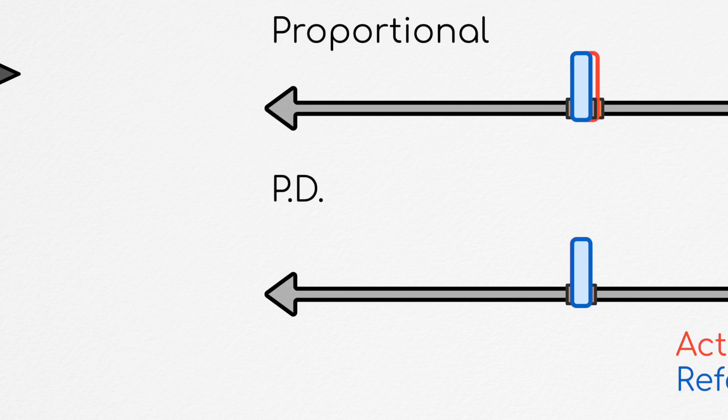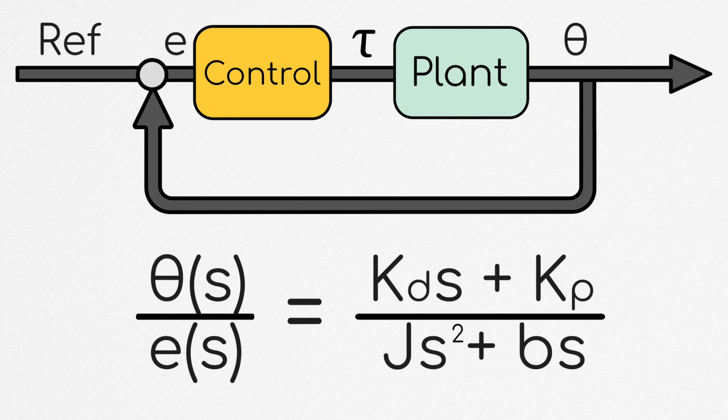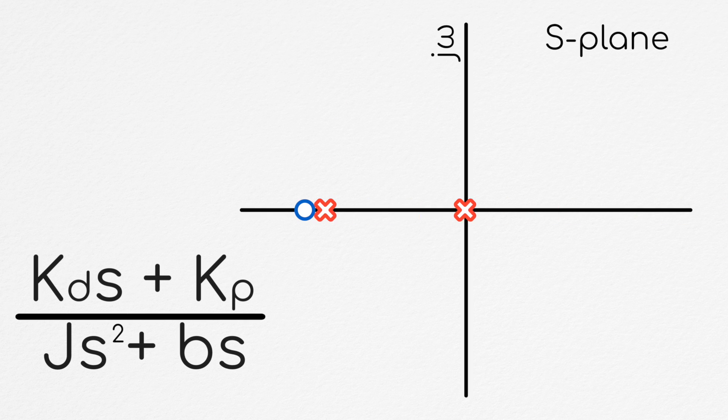If we use such a controller, we see that our open-loop transfer function between error and position is equal to kd*s plus kp divided by j*s squared plus b times s, meaning our root locus would now look like this.